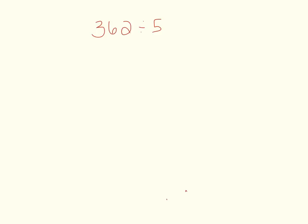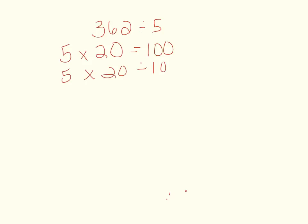I'm going to start with 5 times 20, which gives me 100. I'm then going to do 5 times 20 again, which gives me another 100. I now have 200 out of the 362 dividend. So I'm going to multiply one more time — 5 times 20 — which gives me another 100. I am now sitting at 300.